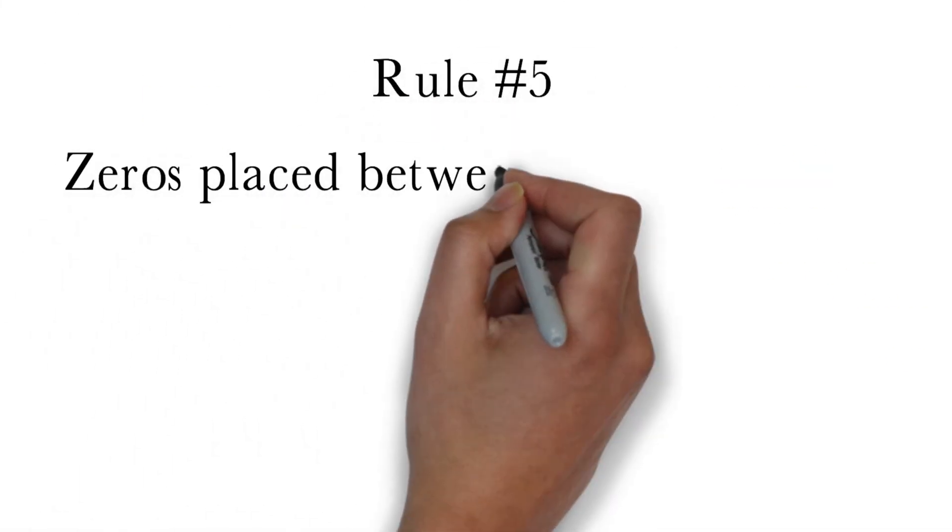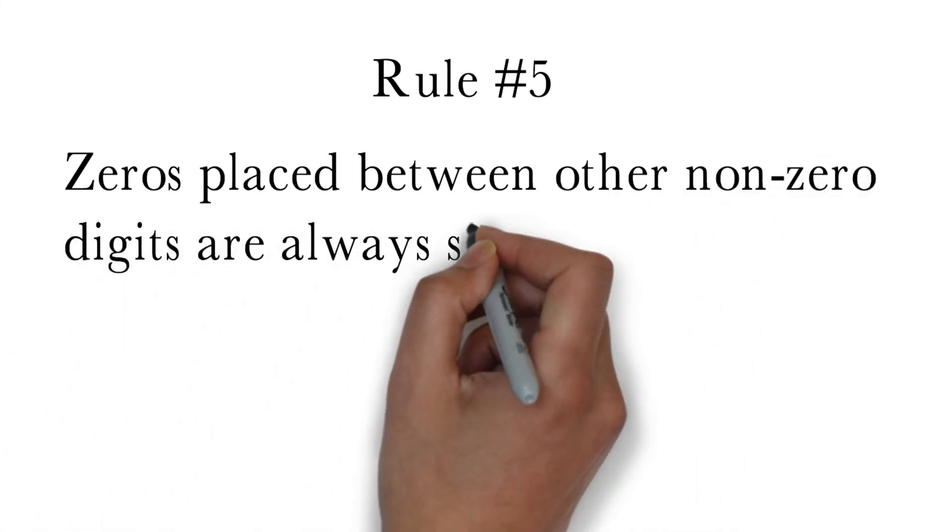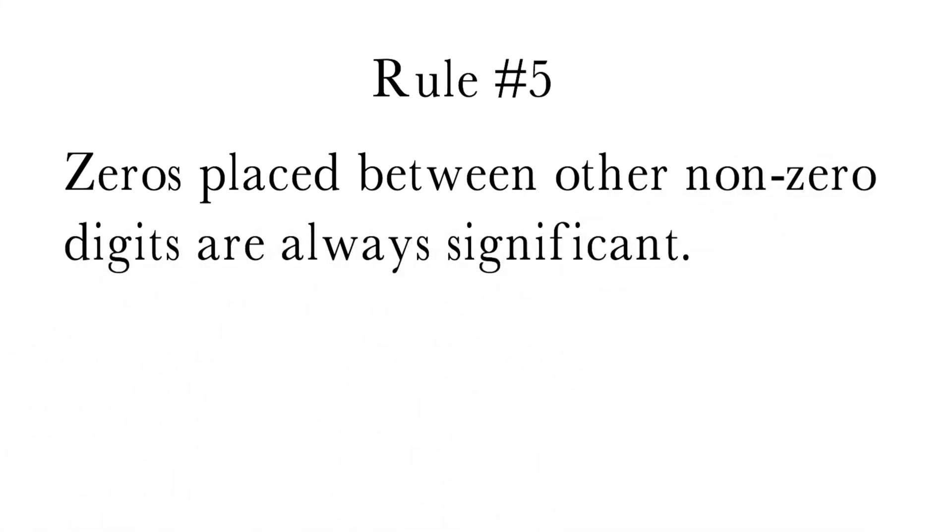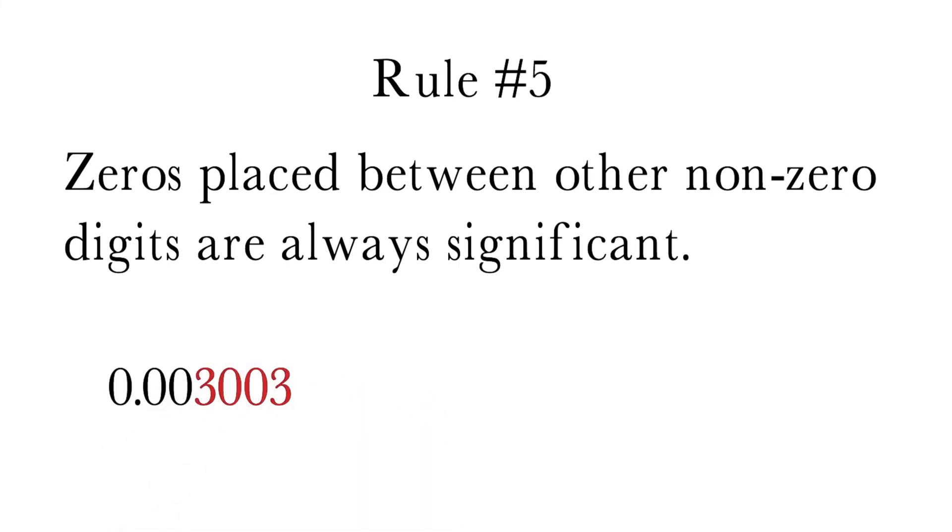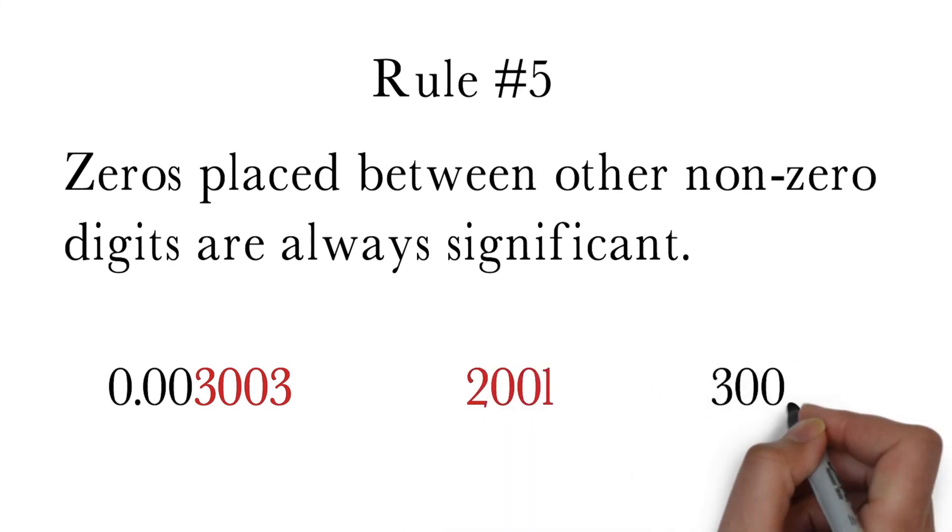The fifth rule of significant digits is zeros placed in between other non-zero digits are always significant. For example, 0.003003 has four significant digits, 2001 has four significant digits, and 300.101 has six significant digits.